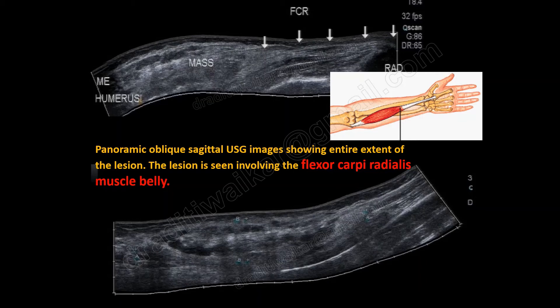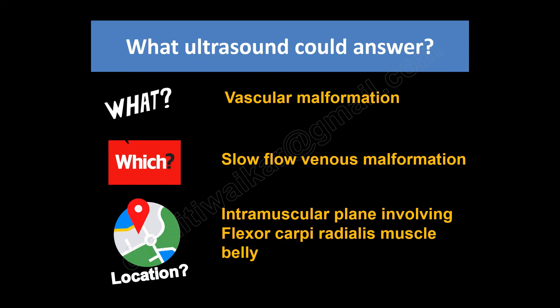This is a panoramic ultrasound image which beautifully shows the entire extent of the lesion — the origin of the lesion within the muscle taking origin from the medial epicondyle of the humerus and inserting onto the base of the second metacarpal. On the basis of ultrasound, we could diagnose what the lesion was: a vascular malformation.